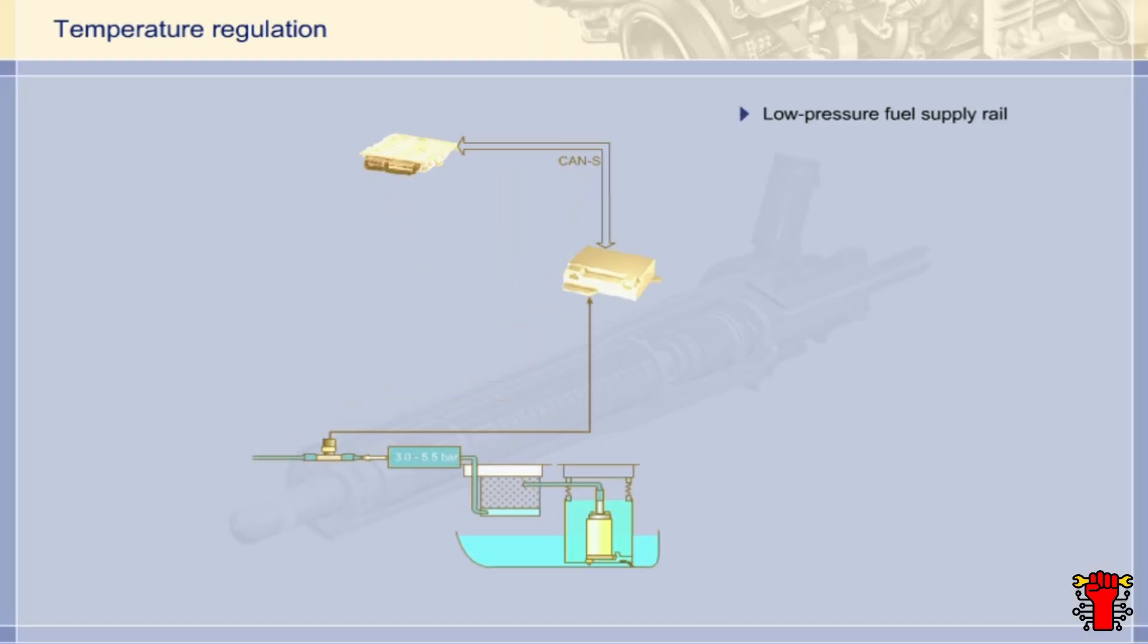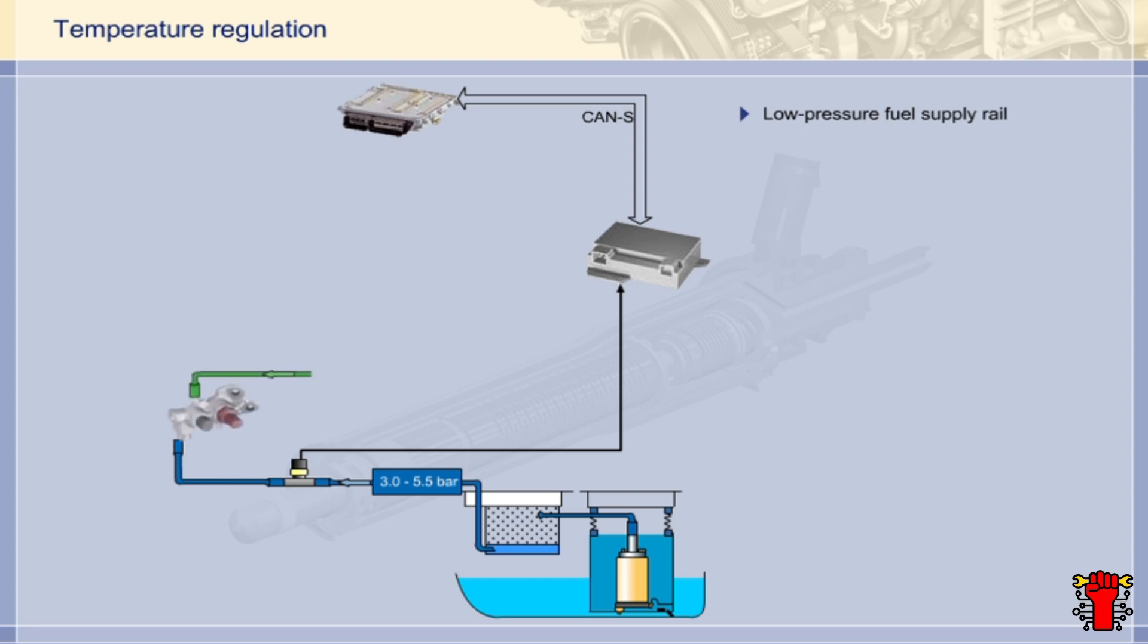The fuel supplied by the low-pressure pump and the return line from the high-pressure side converge at the low-pressure fuel supply rail. The fuel is forwarded from the low-pressure fuel supply rail to the high-pressure pump.